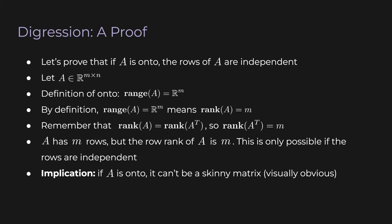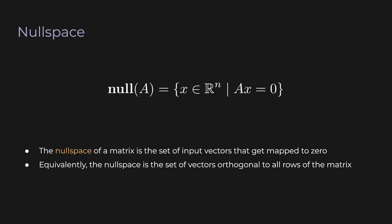Finally, the statement we just proved implies something interesting: if the matrix A is onto, then A can't be a skinny matrix. If A is skinny, then it has fewer columns than rows. For example, imagine a 3×2 matrix — you have two column vectors, each of which is a 3D vector. For the matrix A to be onto, the column vectors have to cover 3D space. But there's no way you can cover 3D space with just two vectors — you need at least 3. If A is skinny, you have fewer columns than you need for A to be onto.